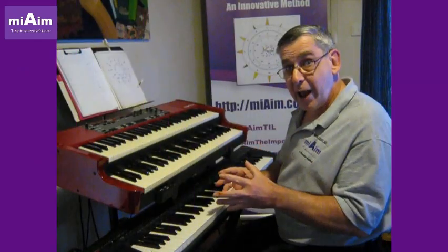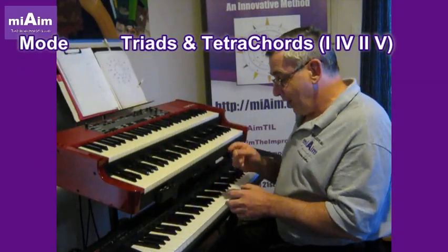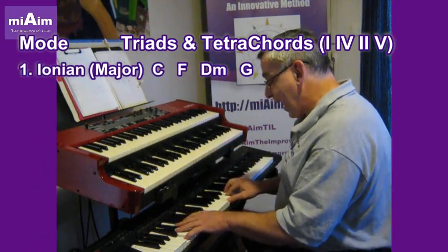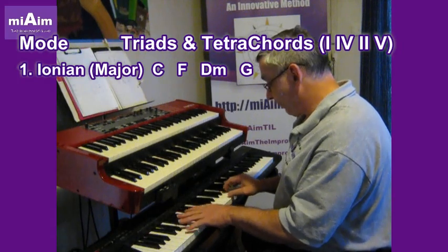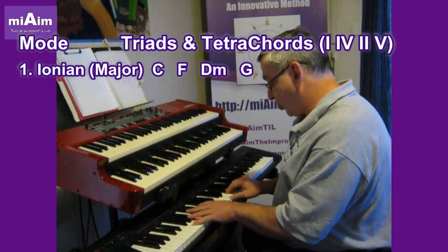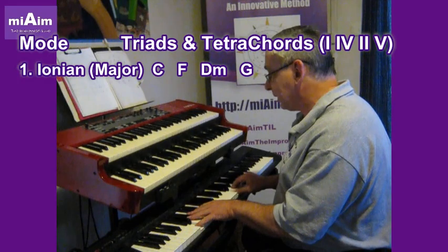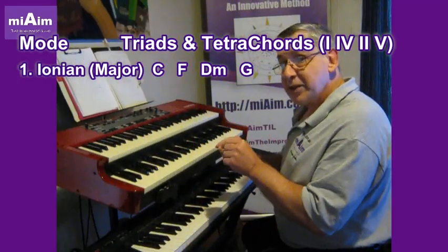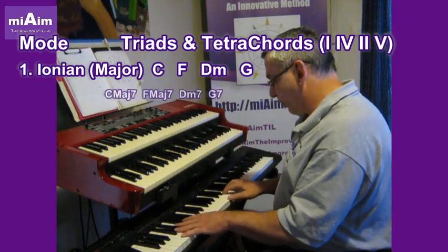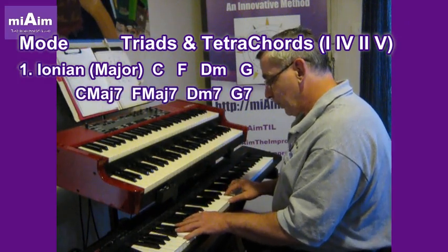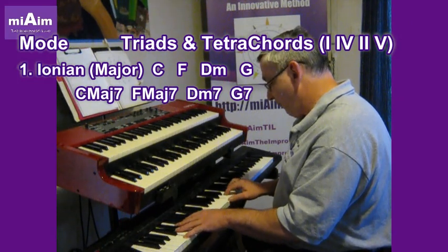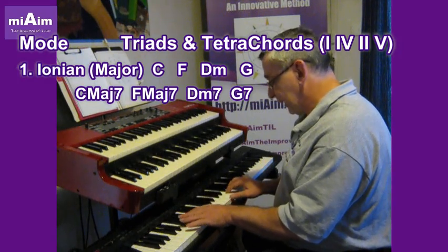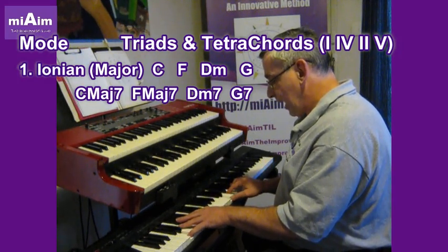So let's have a look at the triads for the major scale. One, four, two, five will be C triad, F, D minor, and G. Use lots of inversions to mix it up a bit. The tetrachords — the four note chords — will be a C major 7th, an F major 7th, a D minor 7th, and a G7.